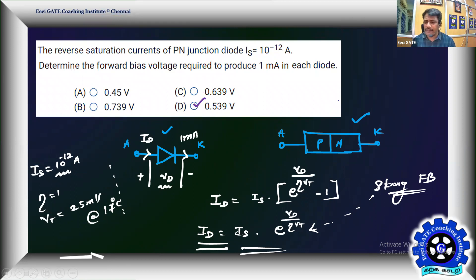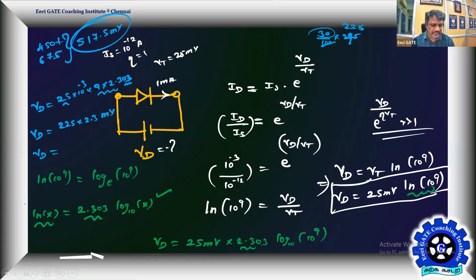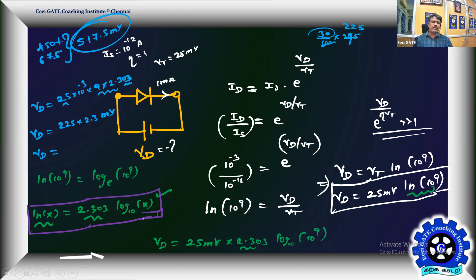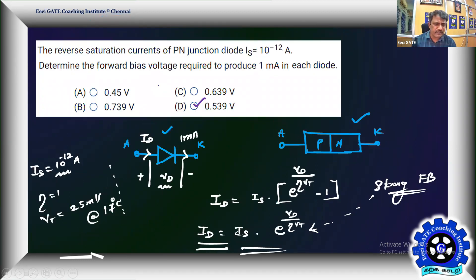One important helping hand we used was the identity ln(x) = 2.303 × log₁₀(x). That's how you approach this problem. The concept is simple, but how you manipulate the data — you need that computation technique, and that's where we can lag. That's the way to answer this problem. It's one mark but feels like it's worth two. That's an interesting one from analog electronics — playing with a simple PN junction diode to find its voltage for a given forward bias current.